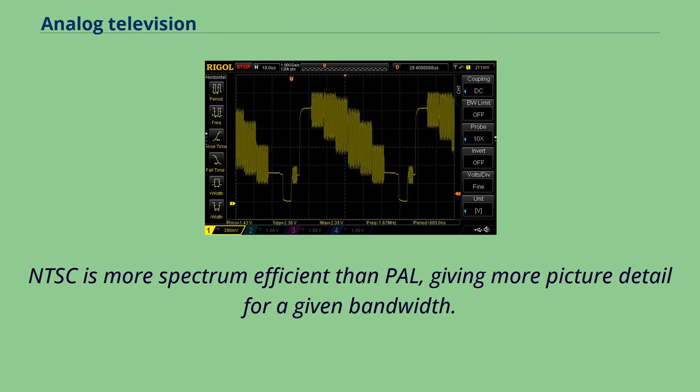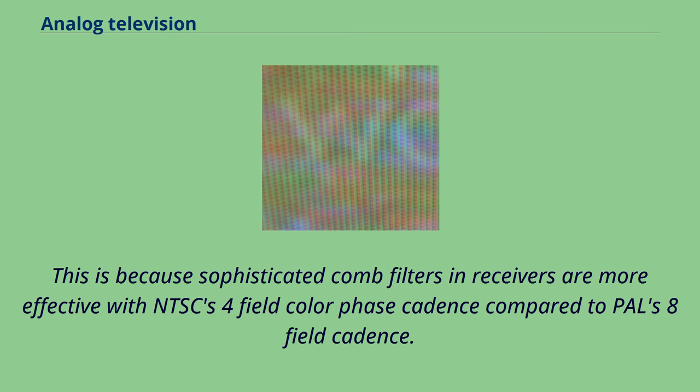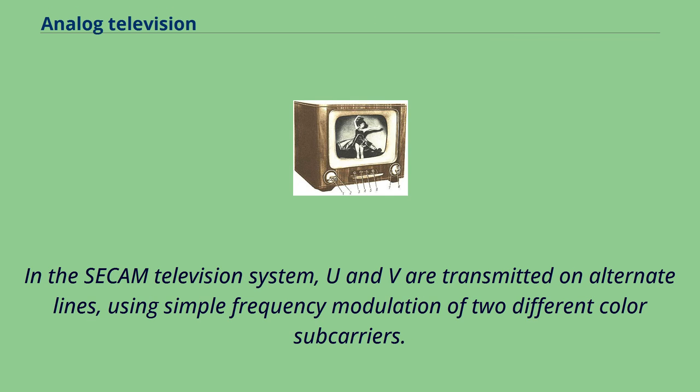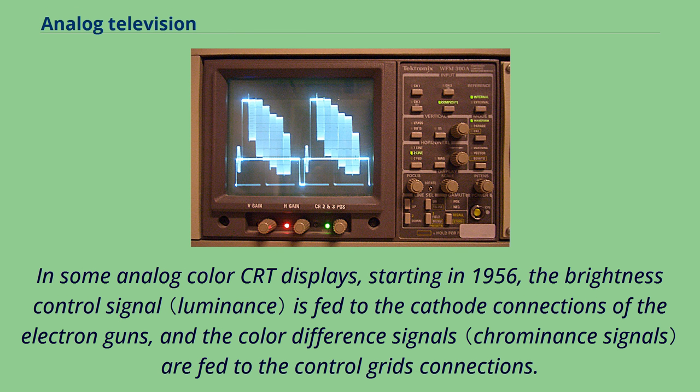In the SECAM television system, U and V are transmitted on alternate lines, using simple frequency modulation of two different color subcarriers. In some analog color CRT displays, starting in 1956, the brightness control signal is fed to the cathode connections of the electron guns, and the color difference signals are fed to the control grid connections. This simple CRT matrix mixing technique was replaced in later solid state designs.